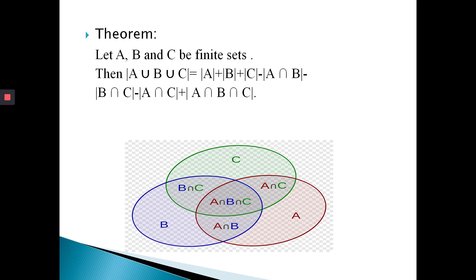Next is the theorem for three sets. Let A, B, C be three finite sets. Then the cardinality of A union B union C equals the cardinality of A plus the cardinality of B plus the cardinality of C, minus the cardinality of A intersect B, minus the cardinality of B intersect C, minus the cardinality of A intersect C, plus the cardinality of A intersect B intersect C.